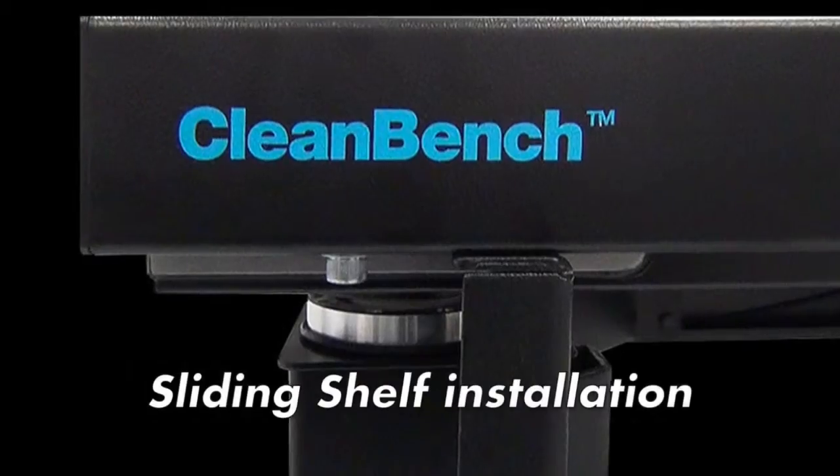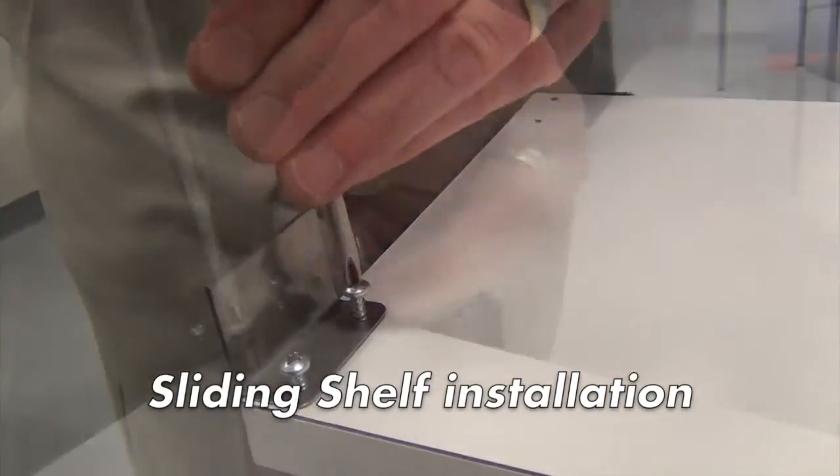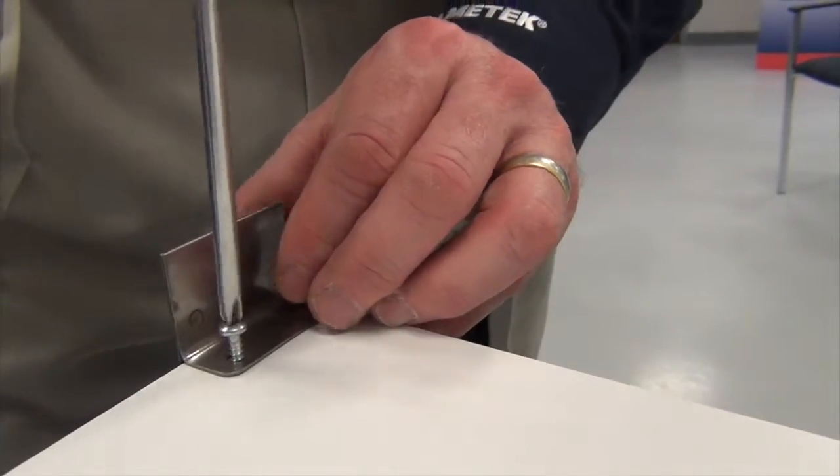With the rear support bar in place, the sliding shelf can be installed. Unpack the shelf. Locate the hardware bag with two clips and four screws.